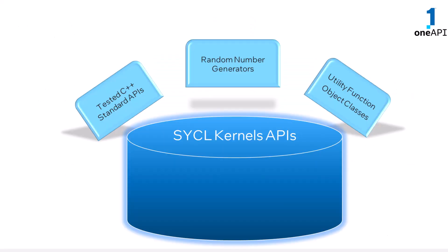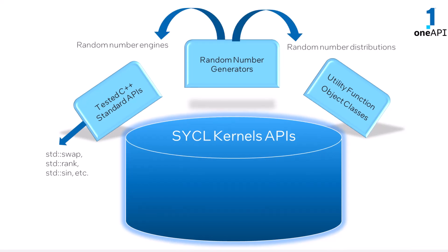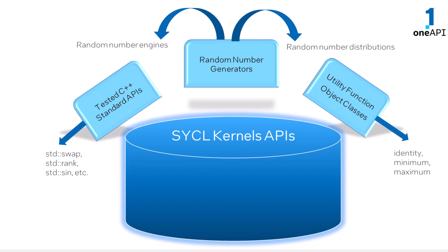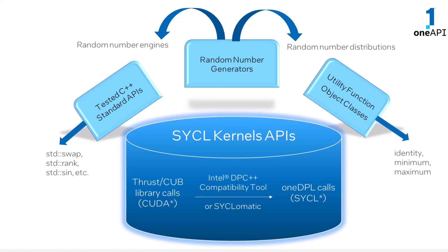Here are the oneDPL APIs for use in SYCL kernels. Certain C++ standard APIs are tested to be employed in device kernels: random number generators including engines to generate unsigned integer sequences of random numbers that can also be converted into statistical distributions, and classes defining utility function objects applied to the input arguments. The library's integration with the Intel DPC++ compatibility tool and its open-source counterpart SYCLomatic enables easy CUDA to SYCL code migration.